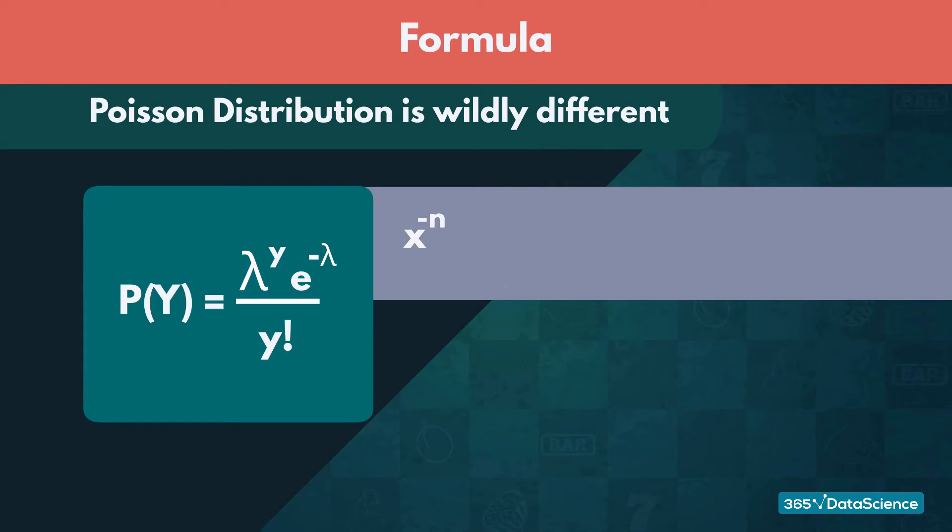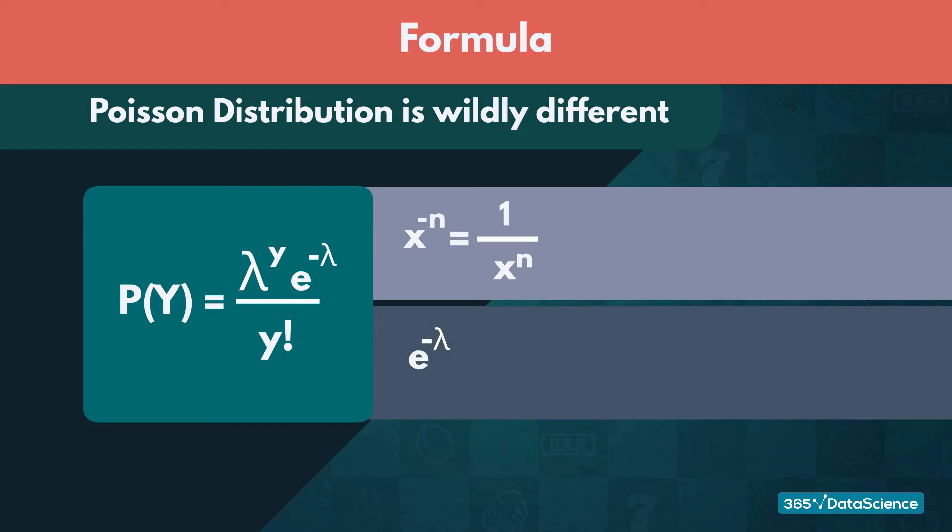Secondly, a number to the power of negative n is the same as dividing 1 by that number to the power of n. In this case, E to the power of negative lambda is just 1 over E to the power of lambda.